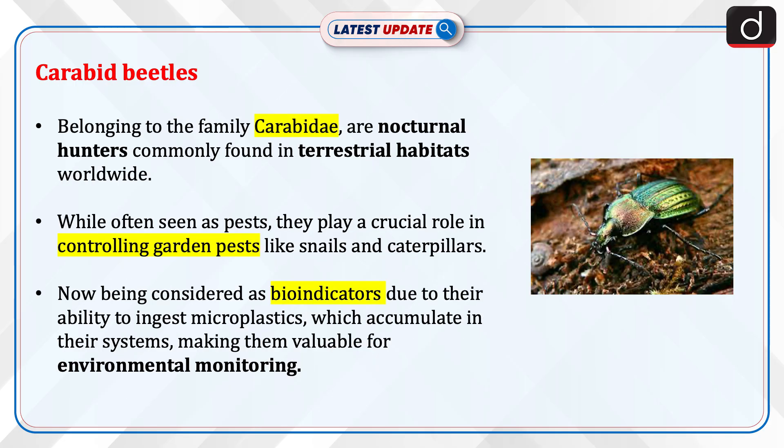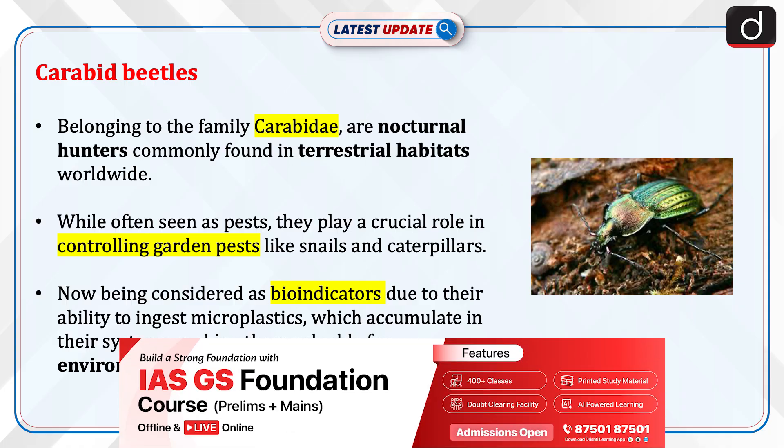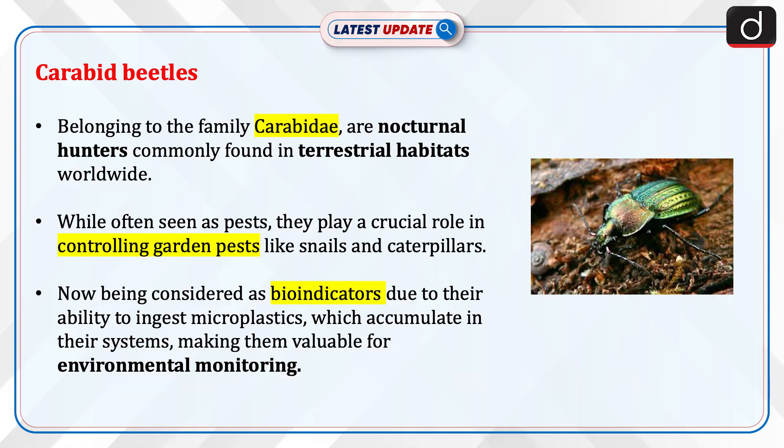Now let's discuss carabit beetles. Carabit beetles, belonging to the family Carabidae, are nocturnal hunters commonly found in terrestrial habitats worldwide. While often seen as pests, they play a crucial role in controlling garden pests like snails and caterpillars.